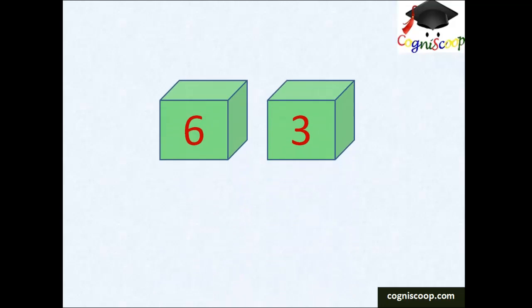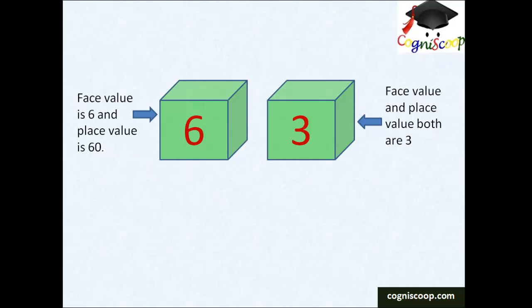Suppose we take the number 63. For 6 in number 63, the face value is 6 and the place value is 60. For 3, both the face value and the place value is 3.